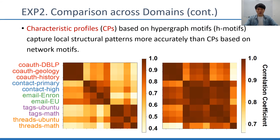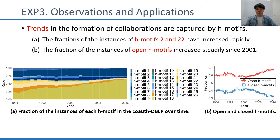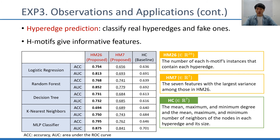These results support that H-motifs play a key role in capturing local structural patterns of real-world hypergraphs. We conduct two case studies on the DBLP dataset, which is a co-authorship hypergraph. We first compute the fraction of instances of each H-motif in the hypergraph from 1984 to 2016. Our results show that over 33 years, the fractions have changed with distinct trends. For example, the fractions of instances of H-motif 2 and H-motif 22 have increased rapidly, and the fractions of instances of open H-motifs increased steadily since 2001. We also consider a hyperedge prediction task where we aim to classify real hyperedges and fake ones; using features obtained by H-motifs leads to more accurate prediction than baseline features, indicating that informative features can be obtained from H-motifs.